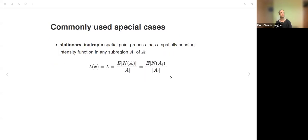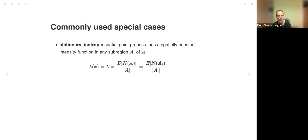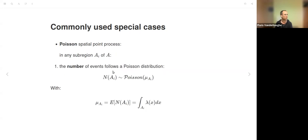Commonly used special cases include the stationary isotropic spatial point process, which has a spatially constant intensity function—λ(x) is just a constant λ, the same for all sub-regions. In a Poisson spatial point process, in any sub-region A_i, the number of events N(A_i) follows a Poisson distribution specific to that sub-region.